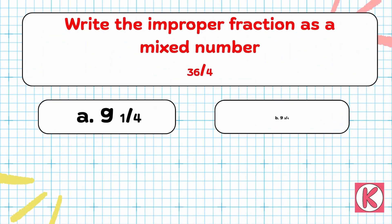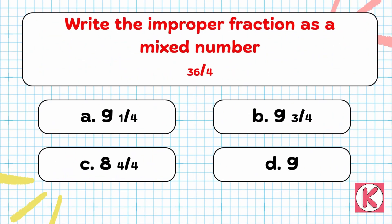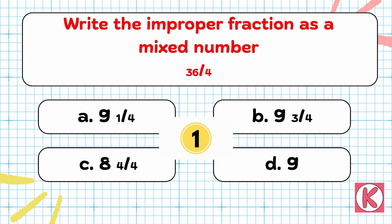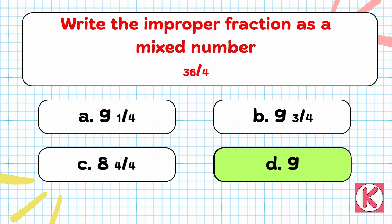Next question. Write the improper fraction as a mixed number: 36 by 4. Right answer: Option D — 9.